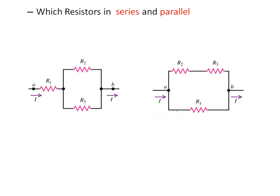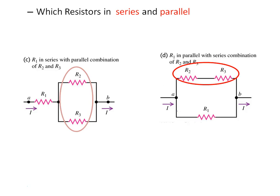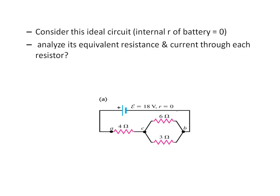Now tell me which resistances are in series and which are in parallel. In the first diagram, R2 and R3 are in parallel and R1 is in series. In the second diagram, R2 and R3 are in series and then they are in parallel with R1.